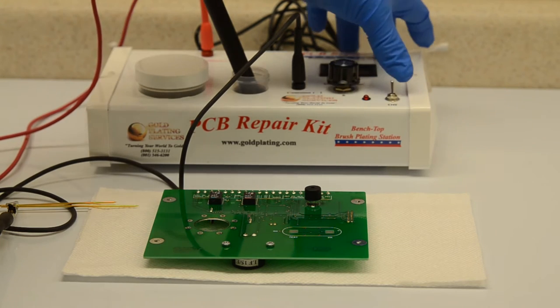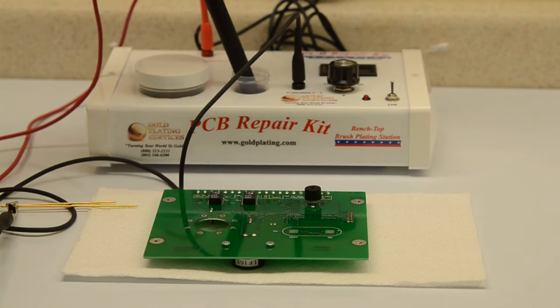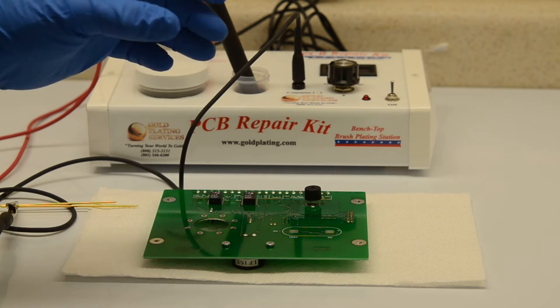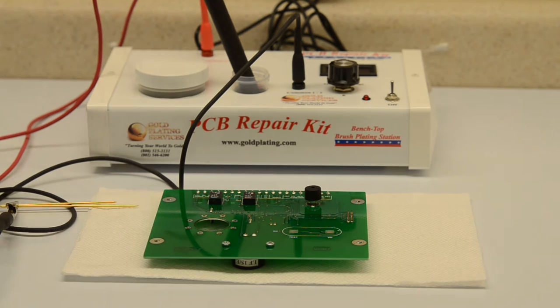We've got the power on. The voltage is currently set at 4.5 volts, which is probably an appropriate voltage because the traces that we're going to be plating are quite fine.